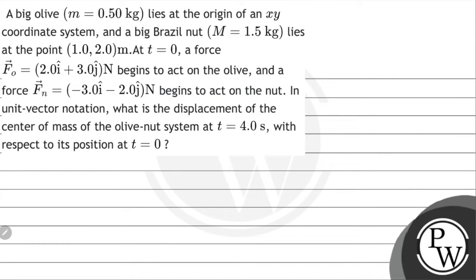Hello Bachchan, let's read the question. The question says that a big olive having mass 0.5 kg lies at the origin of an xy coordinate system, and a big brazil nut having mass 1.5 kg lies at a point (1, 2) meters.